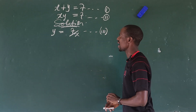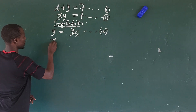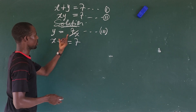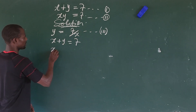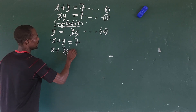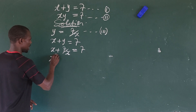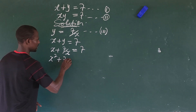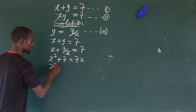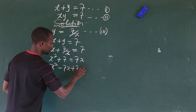Making y the subject gives us y = 7/x — call this equation 3. Now let's substitute equation 3 into equation 1. Wherever we see y, we put in 7/x, so we get x + 7/x = 7. Multiplying through by x gives x² + 7 = 7x, which rearranges to x² − 7x + 7 = 0.